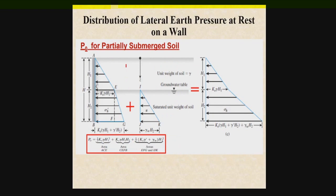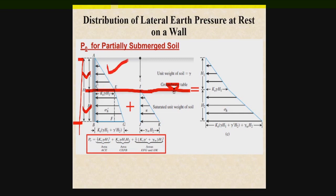Now let us discuss the case of a partially submerged retaining wall. The total height H of the retaining wall is subdivided into two portions: H₁ is the height above the groundwater table (the dry zone), and H₂ is the height below the groundwater table (the wet or submerged zone).